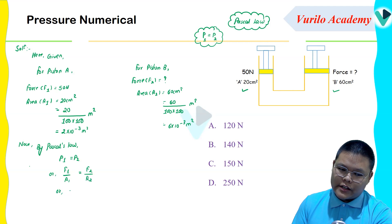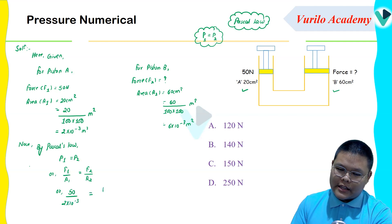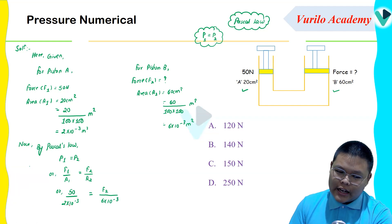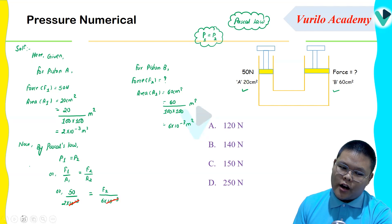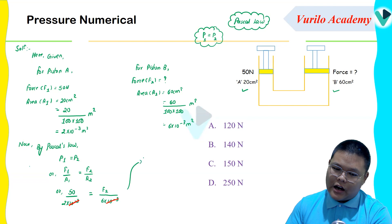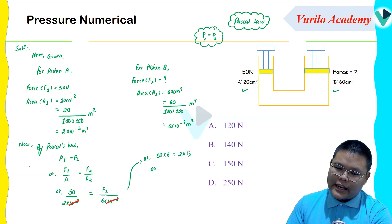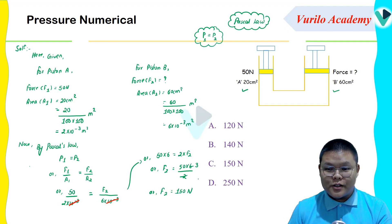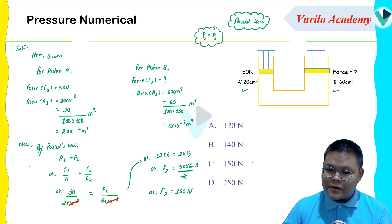Putting in the values: F1 is 50 divided by A1 which is 2 into 10 to the power minus 3, is equal to F2 divided by A2 which is 6 into 10 to the power minus 3. Cross multiply: 50 into 6 is equal to 2 into F2. Therefore F2 is equal to 50 into 6 divided by 2, which gives F2 equal to 150 Newton. So the answer is option C: 150 Newton.